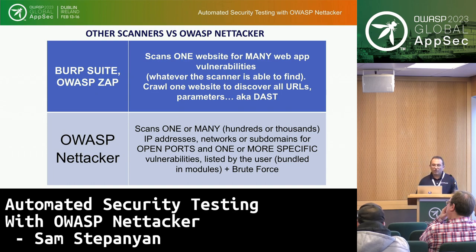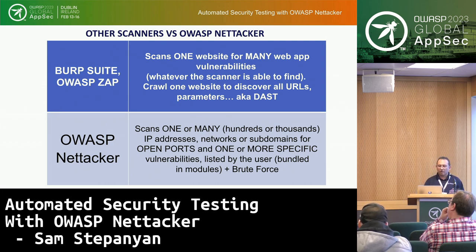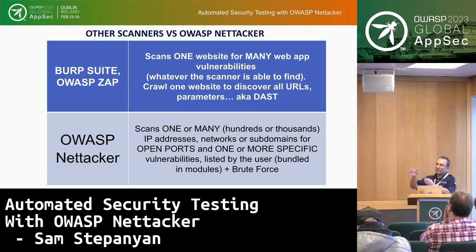The most frequently asked question about NetTacker is: what is it, why was it created, and how does it compare with other scanners like OWASP ZAP or Burp Suite? The difference is that a scanner like OWASP ZAP scans one website for many vulnerabilities — it crawls the website discovering all URLs, parameters, forms, and buttons. OWASP NetTacker, by contrast, scans one or many targets — hundreds or thousands of IP addresses, networks, or subdomains — for open ports and one or more specific vulnerabilities listed by the user. If you want to scan your network for vulnerabilities A, B, and C, that's what NetTacker is for. And that's why it's named 'network attacker.'